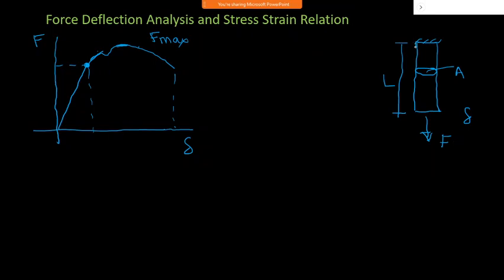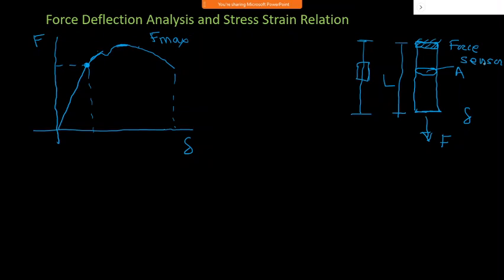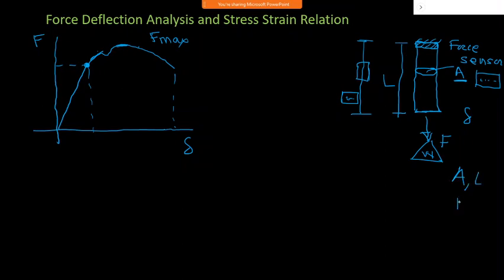To measure force and deflection in a UTM, we mount a strain gauge or force sensor (load sensor) and an extensometer. The extensometer is mounted on the specimen and gives deflection at different load values. One display shows force sensor readings and another shows the extensometer readings. As we increase the load W, we get the force-deflection curve for that particular area A and length L.